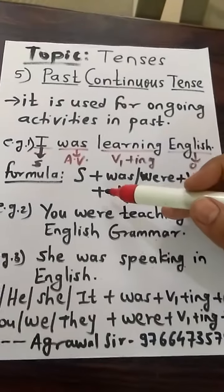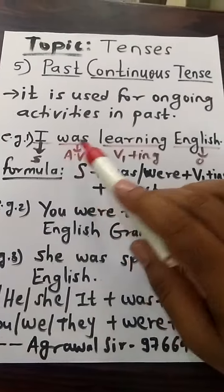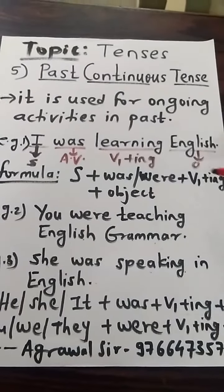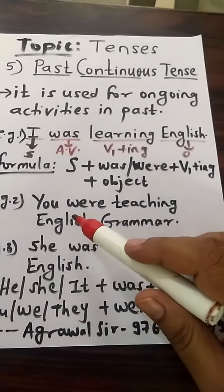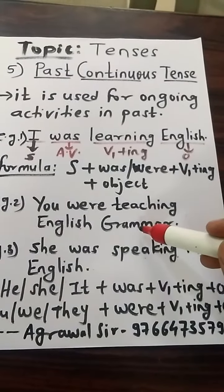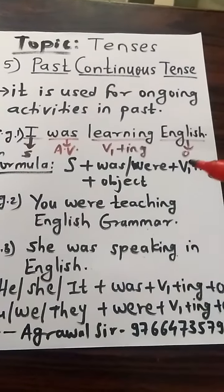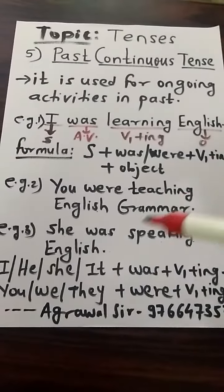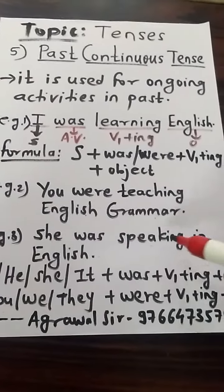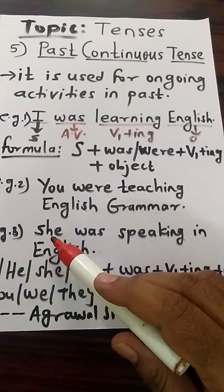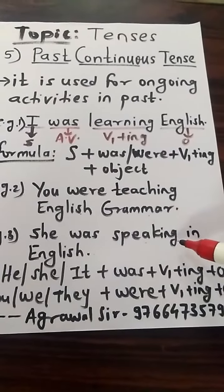Now I am translating these examples into Marathi for new learners. 'I was learning English' — Me ingratji shikat hoto. 'You were teaching English grammar' — To mi ingratji väkaran shikwat hota. Example 3: 'She was speaking in English' — Ti ingraji made bolat hoti.